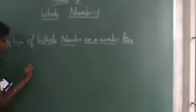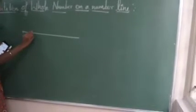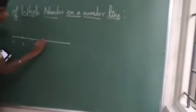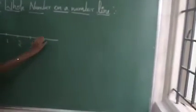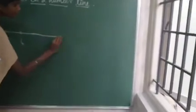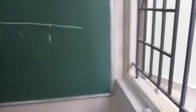First, simply draw a number line. Whole numbers always start from 0. So here it is 0, and after that comes 1, then 2, then 3, then 4, then 5, then 6, then 7, and it goes on like this.